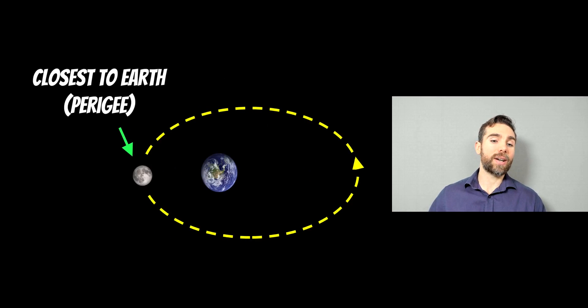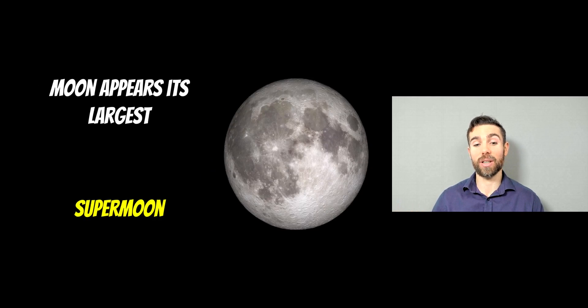So at perigee, this is the closest point to Earth. So here in the sky, the moon is going to appear bigger because it's actually physically closer. So here you would have a supermoon. And this is where the moon appears its largest in the sky.